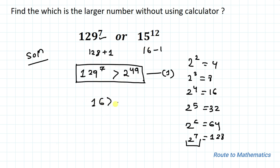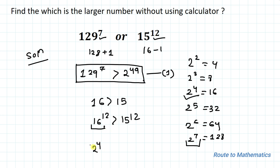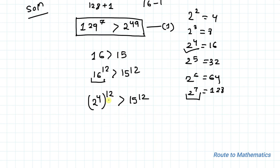Similarly, for the next number, I can write 16 is greater than 15. Taking the 12th power on both sides, we have 16^12 is greater than 15^12. And we know that 16 is nothing but 2^4, so substituting that value we have (2^4)^12 is greater than 15^12.